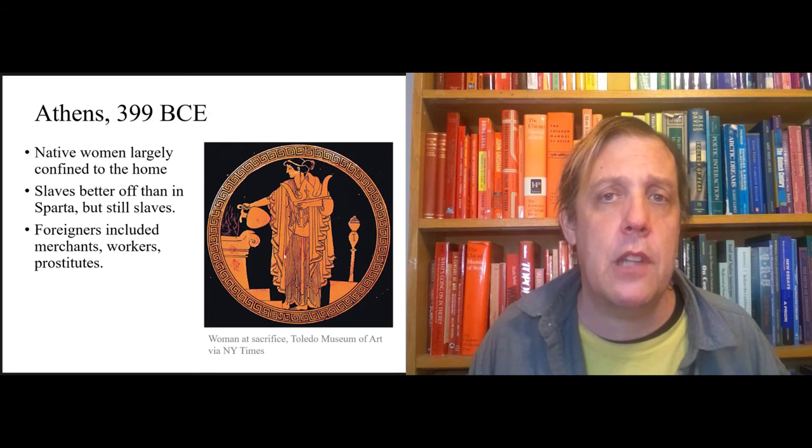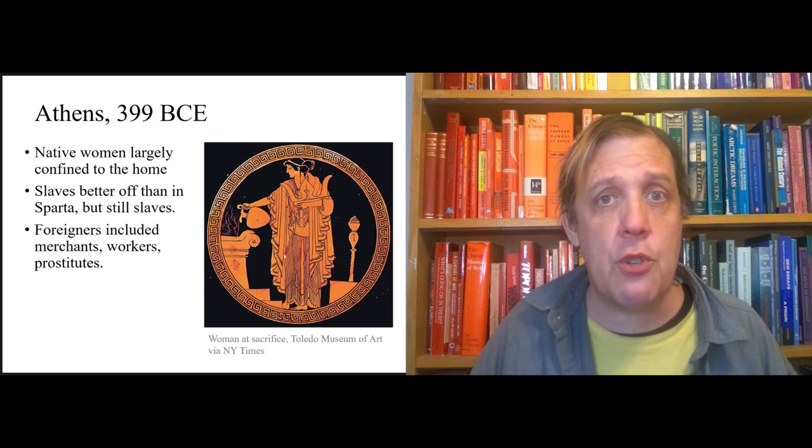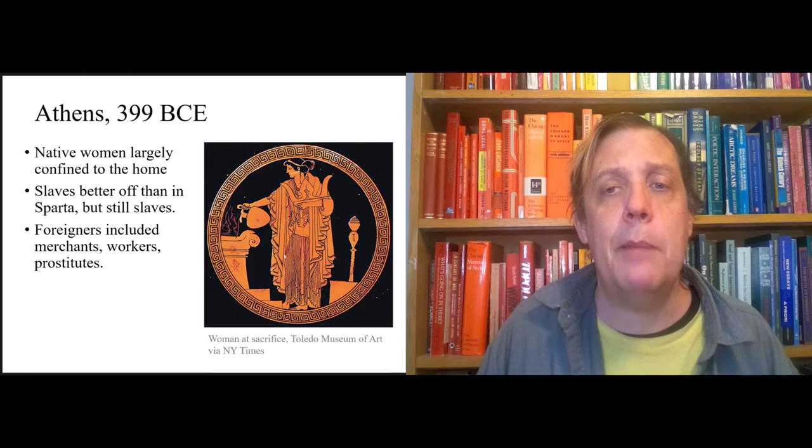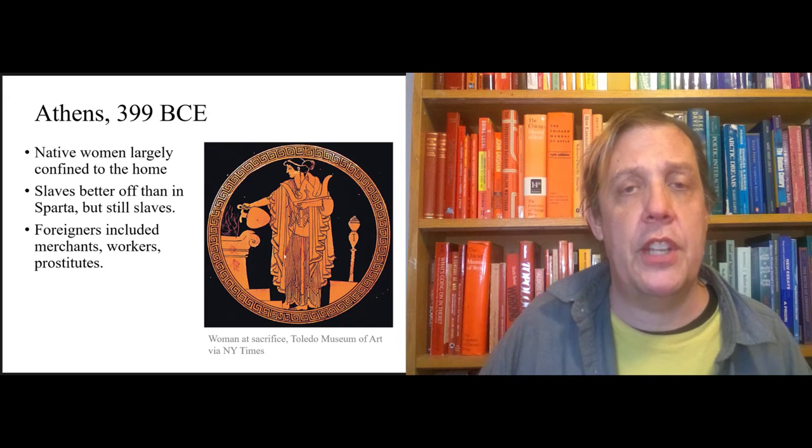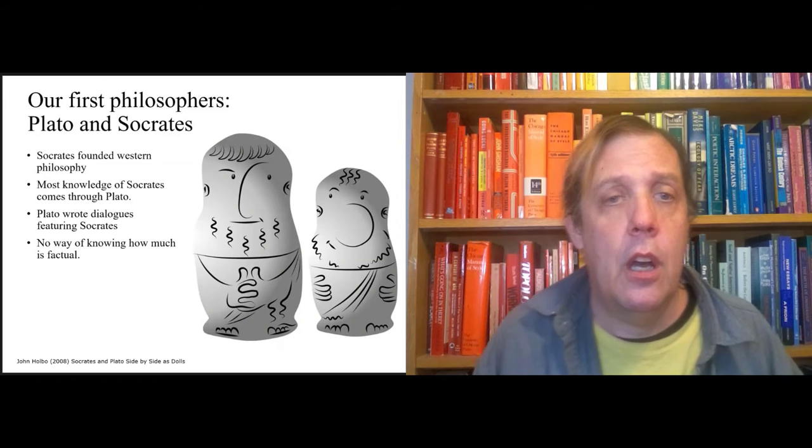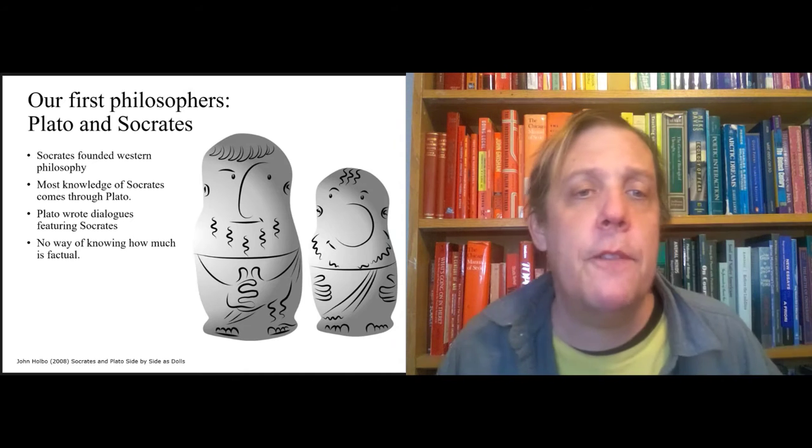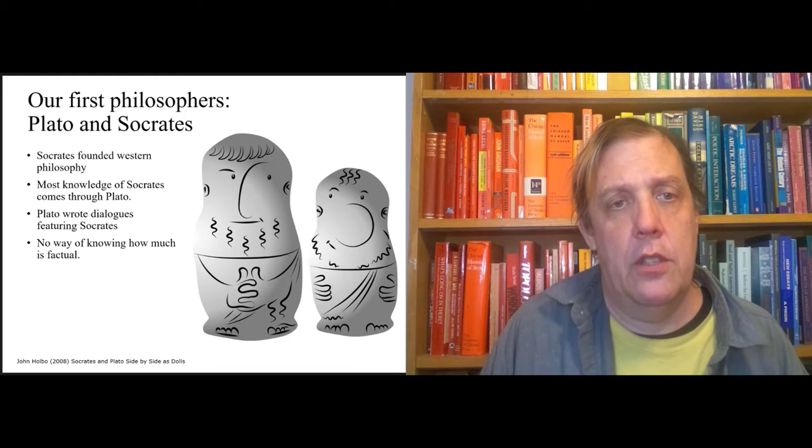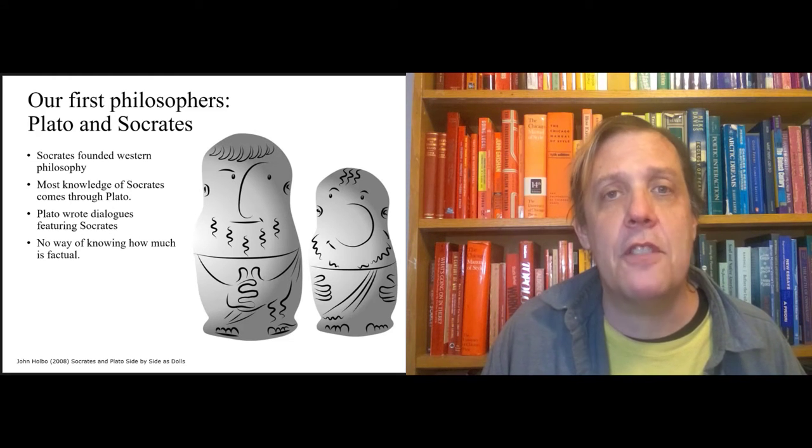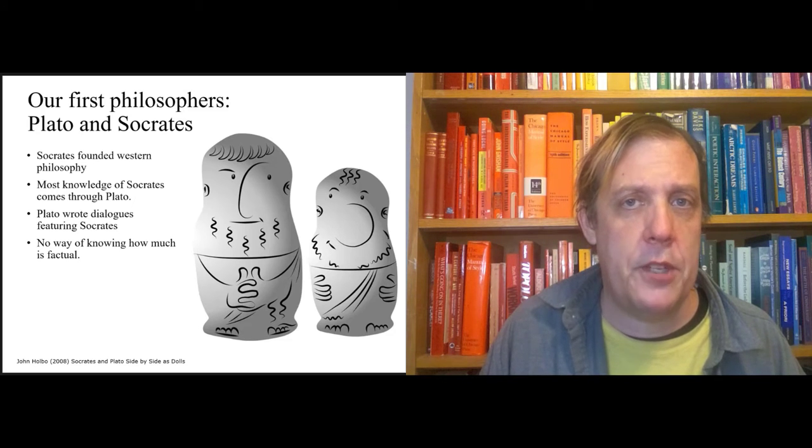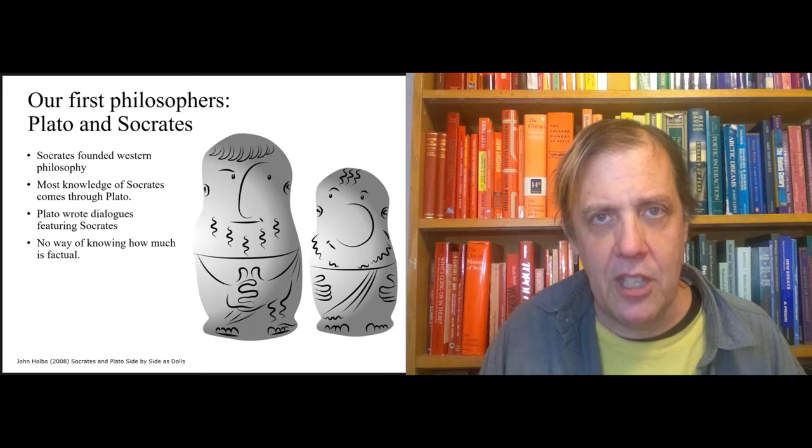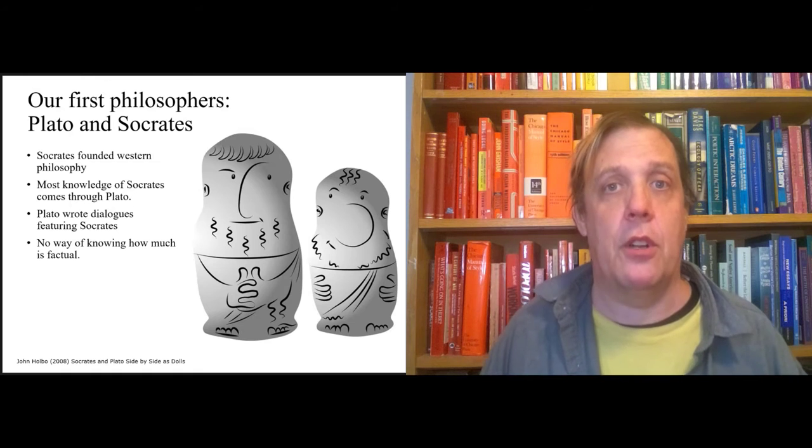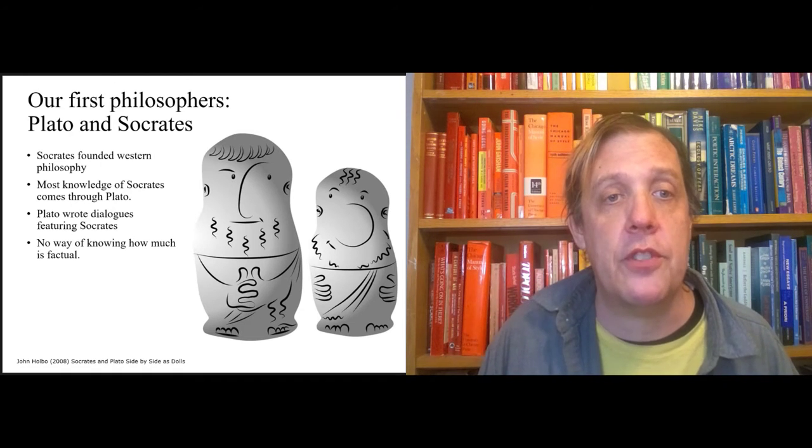Foreigners included merchants, workers, and prostitutes. Like I said on the previous slide, Athens was a trading city and a naval power, so a lot of people came from many foreign cities. Socrates, okay, so the first philosophers. Philosophy as we know it in the West begins with Socrates. There are a class of philosophers in the Western tradition called the pre-Socratics, but you can tell by their name that they're sort of prehistory. They're before the original philosopher in the European tradition, Socrates.